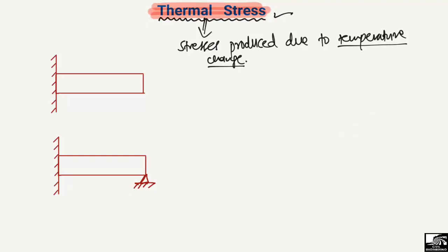Looking at two examples — a rod or beam — there is a key difference. In the first body, one end is fixed and the other end is free. In the second body, one end is fixed and the other is supported with a hinge support. In the first body, there is no restriction at the free end, so the thermal stresses will be zero. For thermal stresses to exist, a restriction is required.